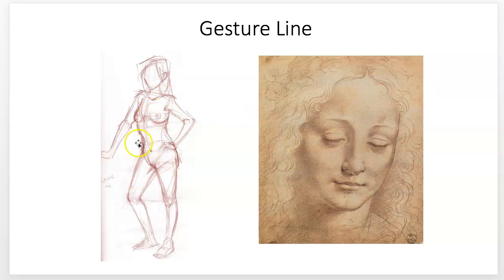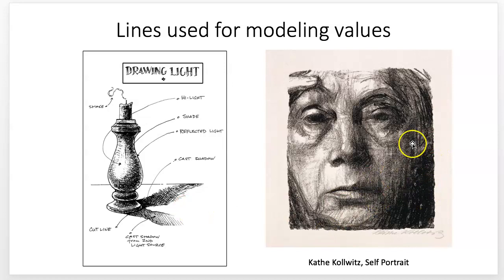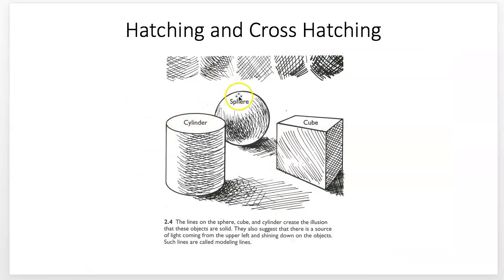These are gesture-type drawings — sort of sketchy, but really it doesn't have to be messy. It's about the form being defined by the pencil freely moving around the surface. Lines are also used to build up values — modeling values through hatching and cross-hatching. When you do line assignments with values, you need to do it through hatching and cross-hatching, not just make a flat black shape.